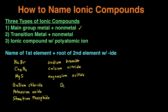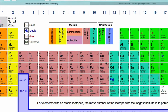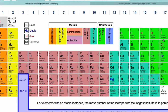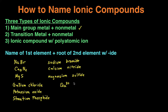So gallium is Ga, and to figure out the charge, let's find gallium on the periodic table — it's right here. Elements in the first column have a positive one charge, elements in the second column have a positive two charge. Gallium is in the third column, so it's going to be a positive three charge. So gallium is 3+. Then chloride — let's find chlorine. Chlorine is over here: positive one, positive two, positive three, then positive four or negative four, negative three, negative two, negative one. So chlorine has a negative one charge.